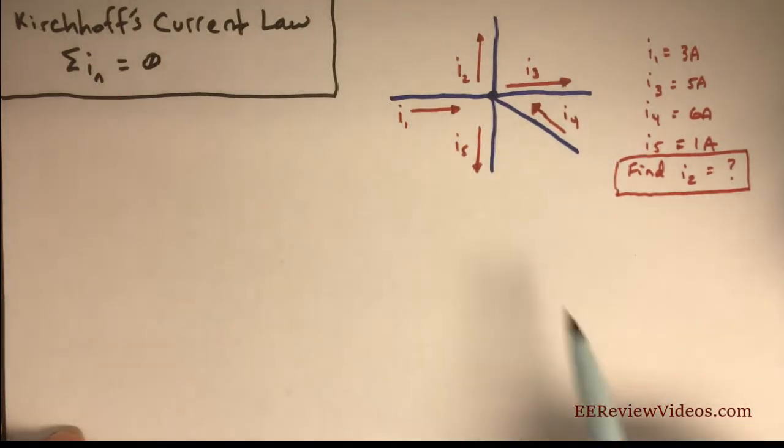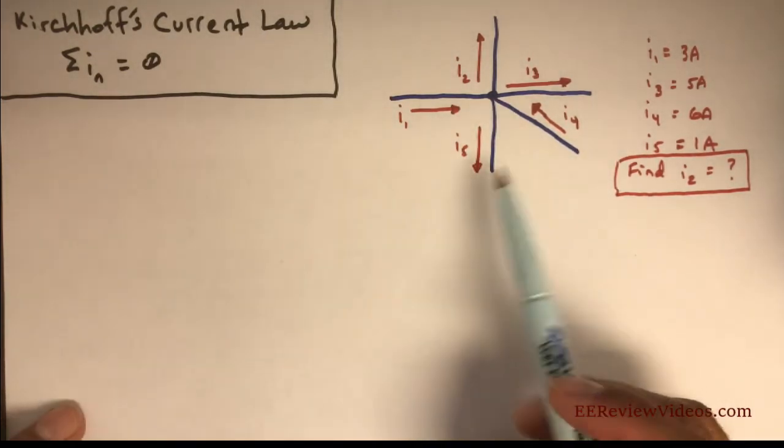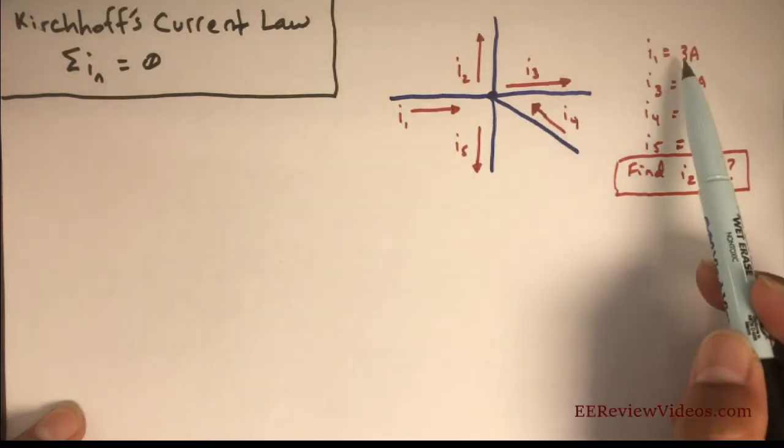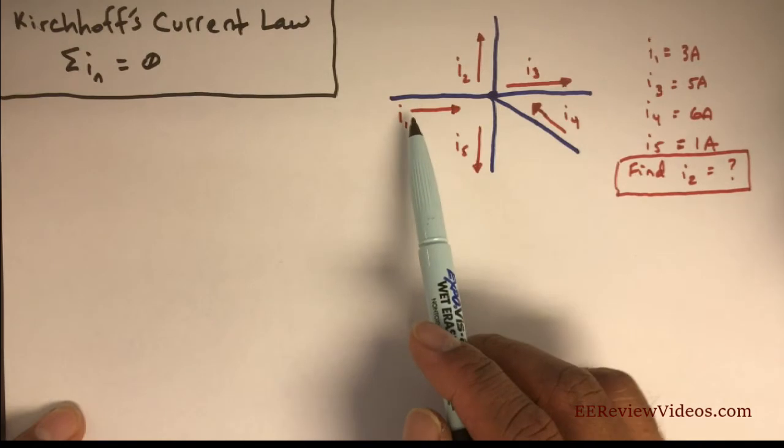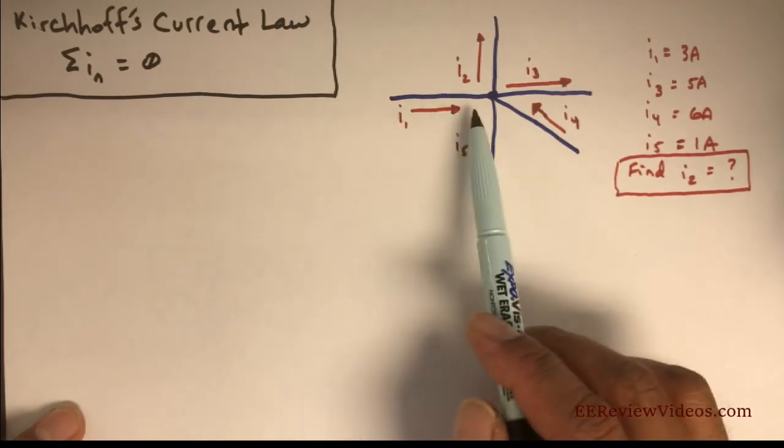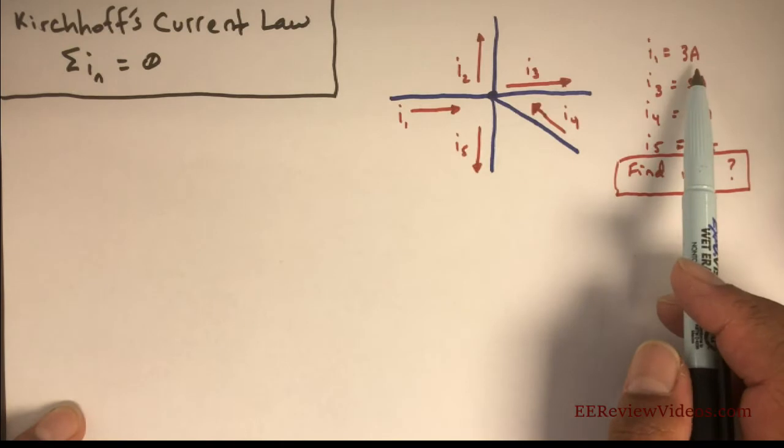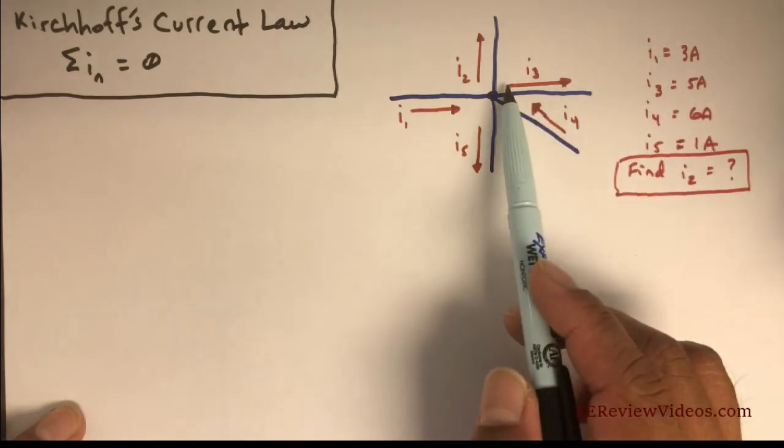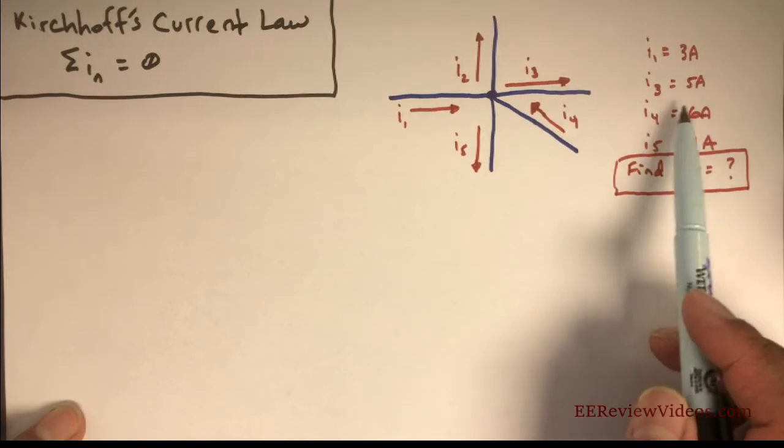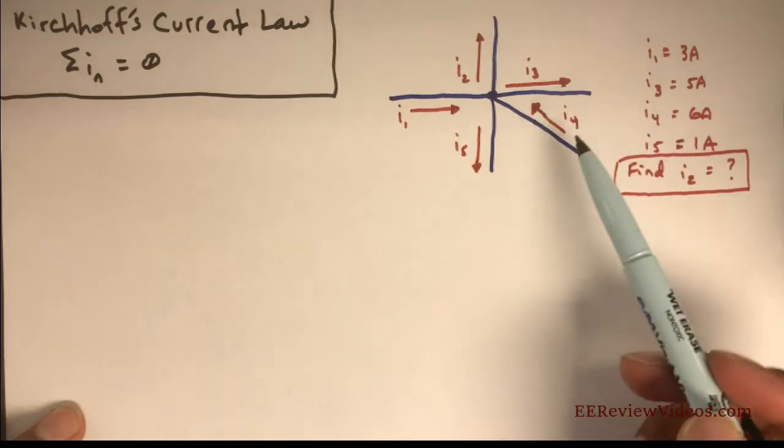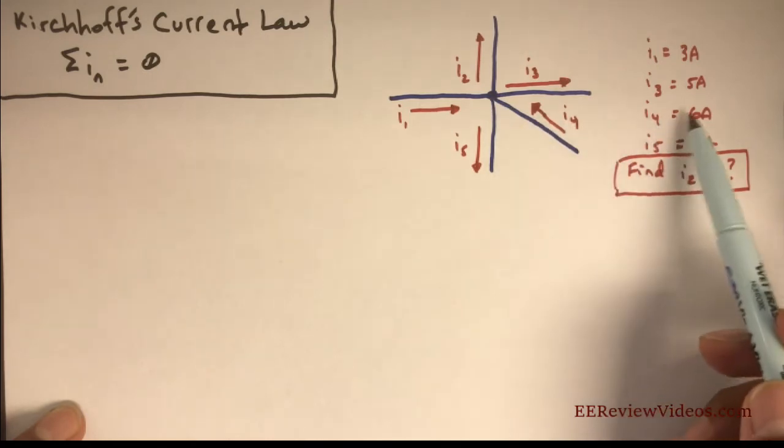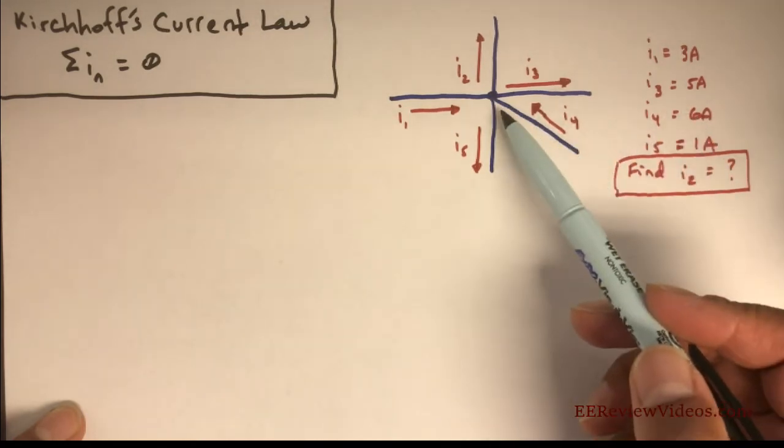In this particular problem, we're given all the currents except one. We're told I1 equals 3 amps. Take a look at the direction being labeled here - the current going into this node is 3 amps. The current for I3, leaving that node, is 5 amps. The current of I4 is labeled as going into the node, so that current is 6 amps going in that direction.